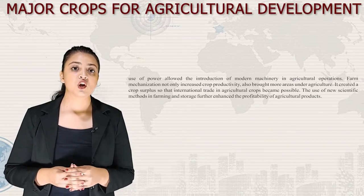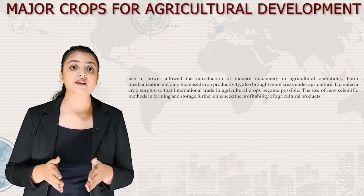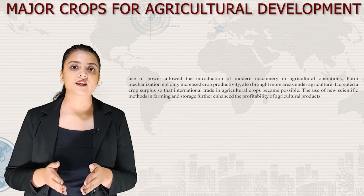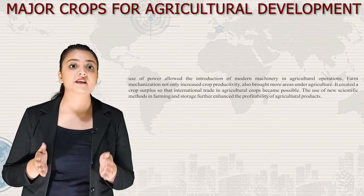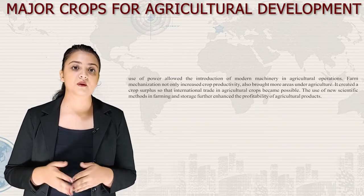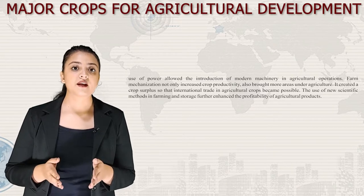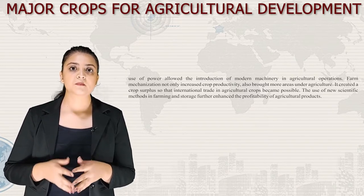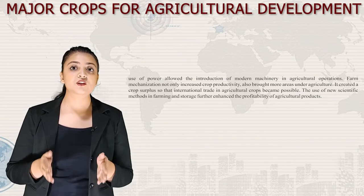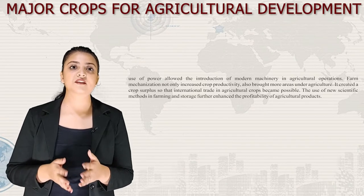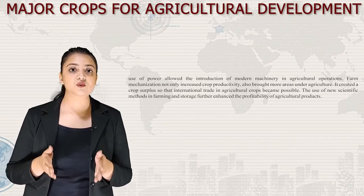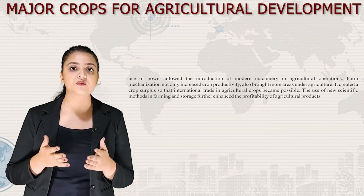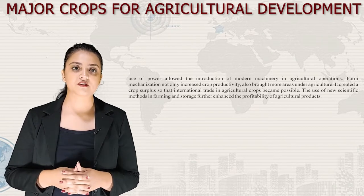Farm mechanization not only increased crop productivity but also brought more areas under agriculture. It created a crop surplus so that international trade in agricultural crops became possible. The use of new scientific methods in farming and storage further enhanced the profitability of agricultural products.